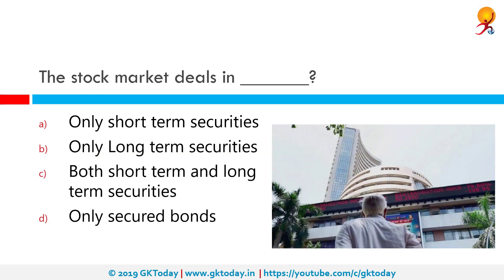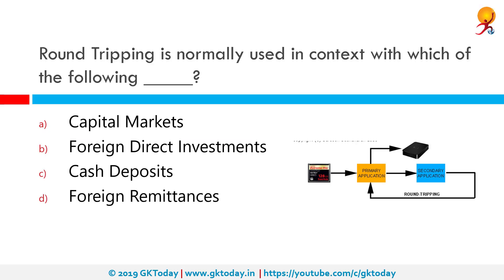The stock market deals in only long-term securities. There are about seven officially recognized stock exchanges in India listed by SEBI. Round tripping, also known as round trip transactions or lazy susans, is defined as a form of barter involving a company selling an unused asset to another company while at the same time agreeing to buy back the same or similar assets at about the same price. It is normally used in the context of FDI.